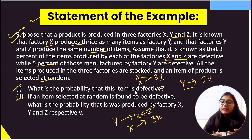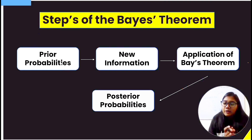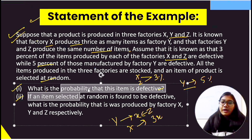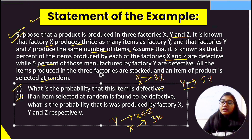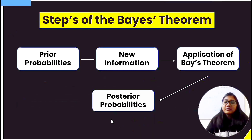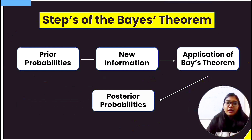Let's go through the steps of Bayes' theorem. Step 1: find the prior probability — the simple initial probability. Step 2: use the new information given (defective rates) as conditional probabilities. Step 3: apply Bayes' theorem to find the posterior probability.